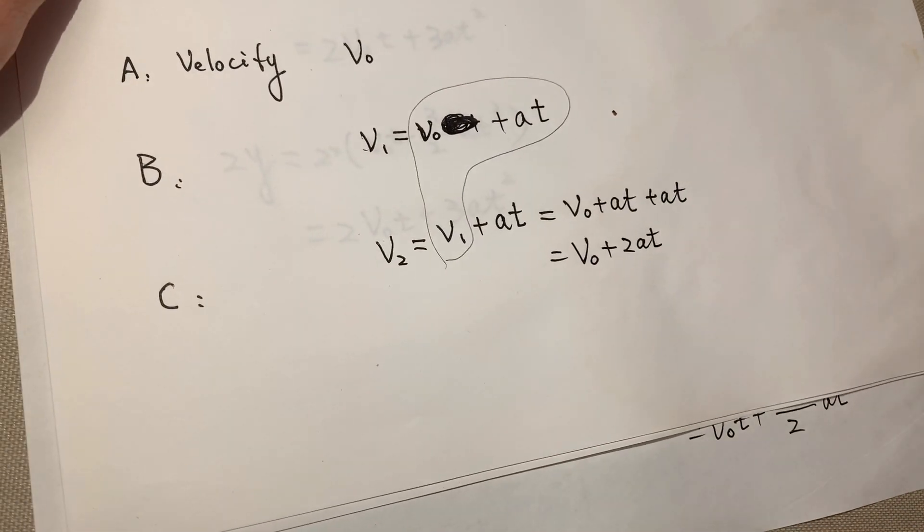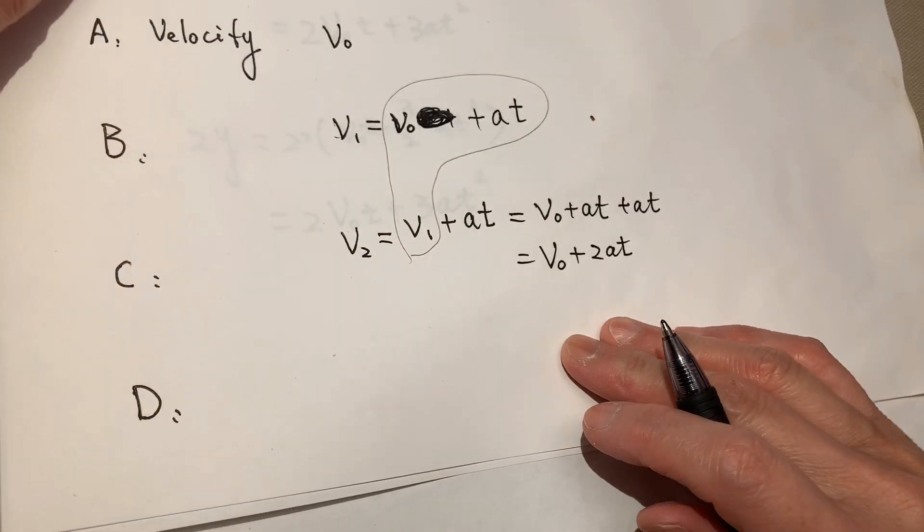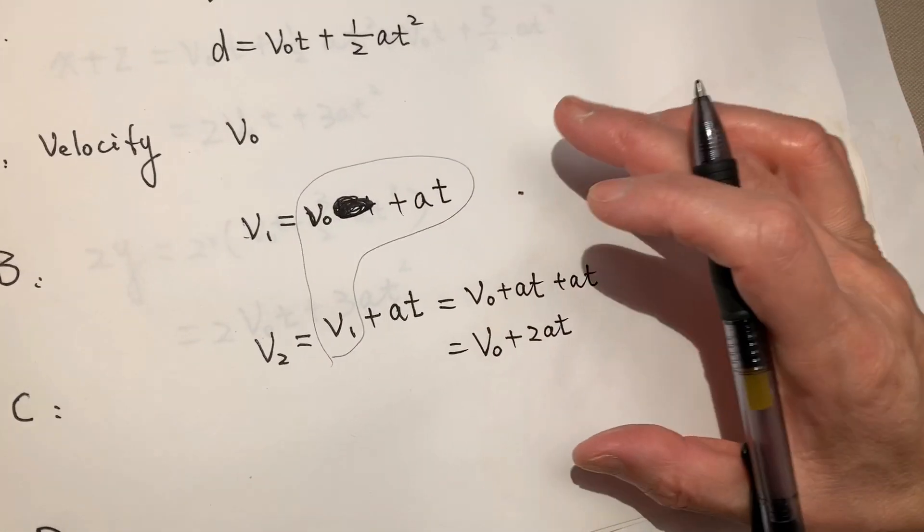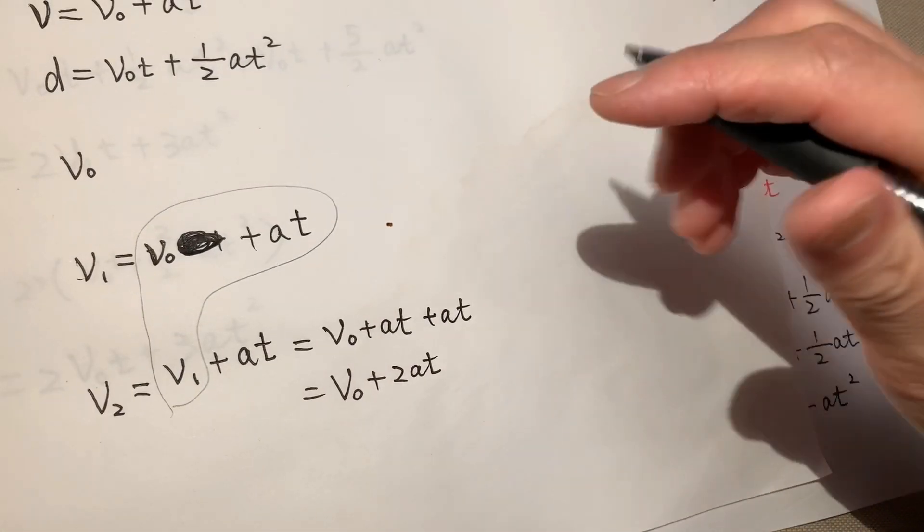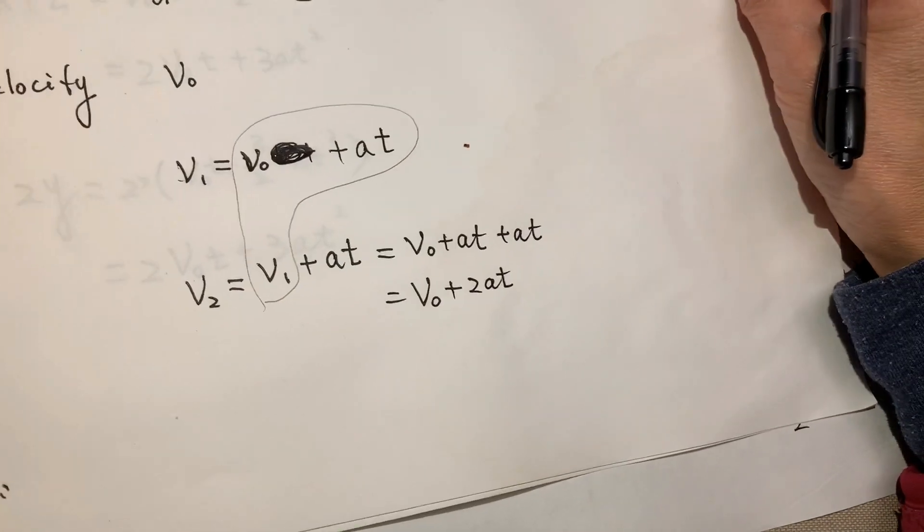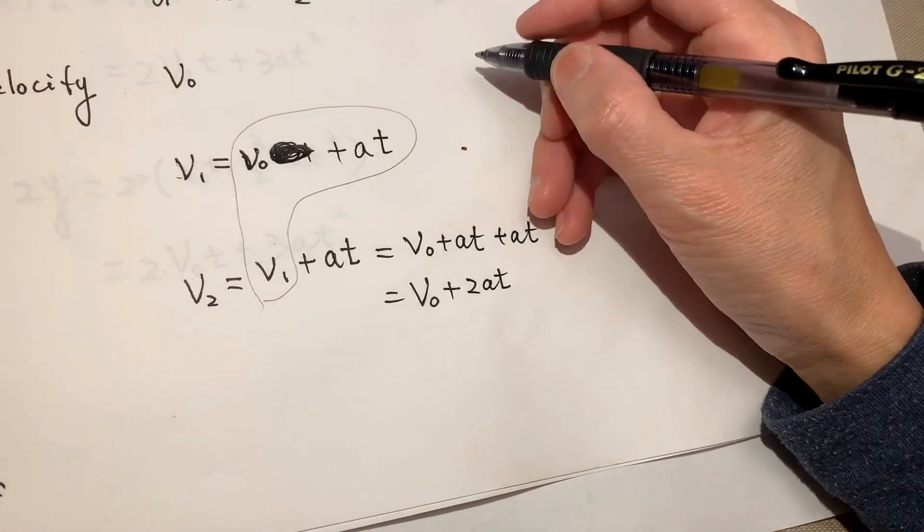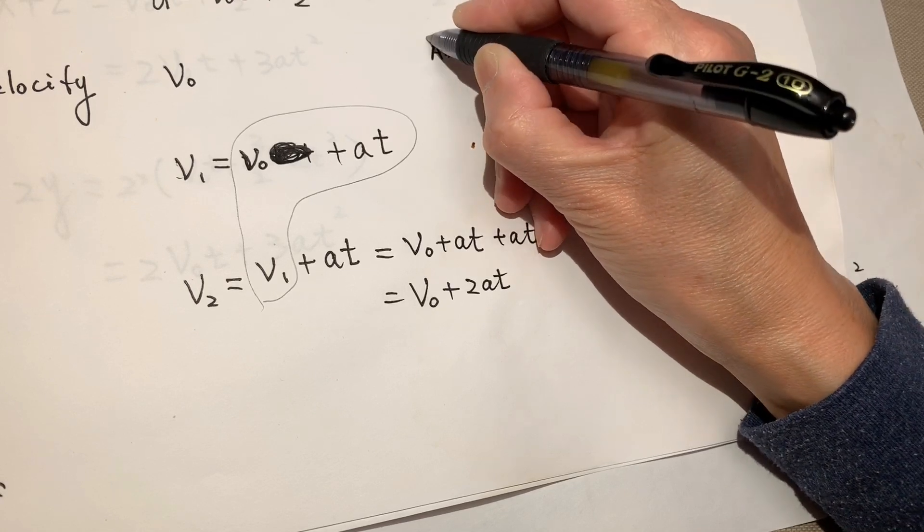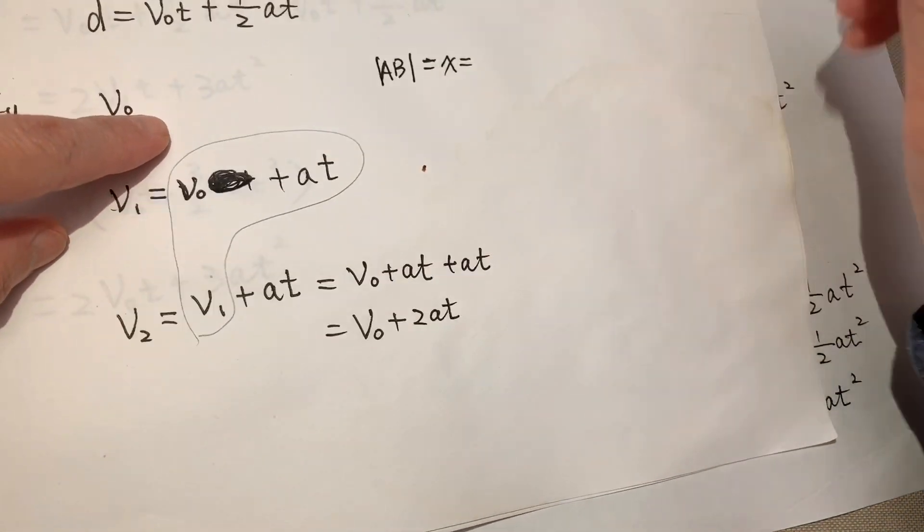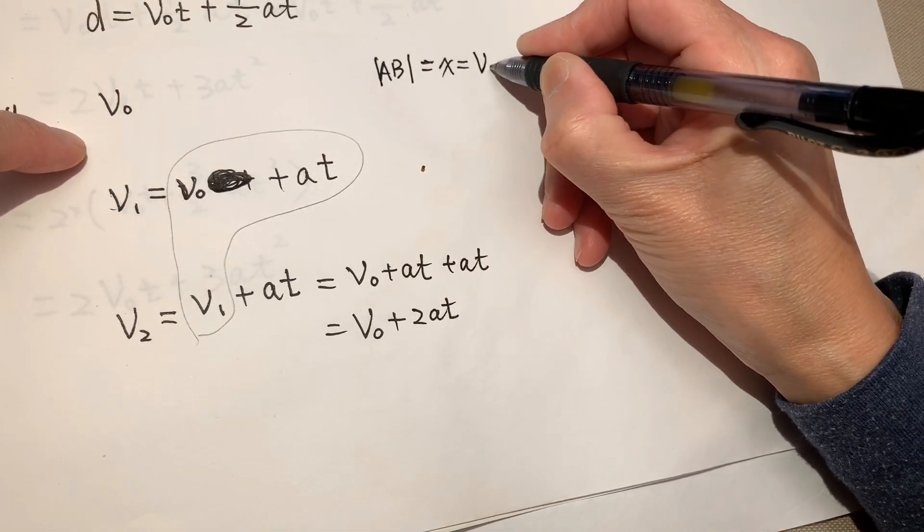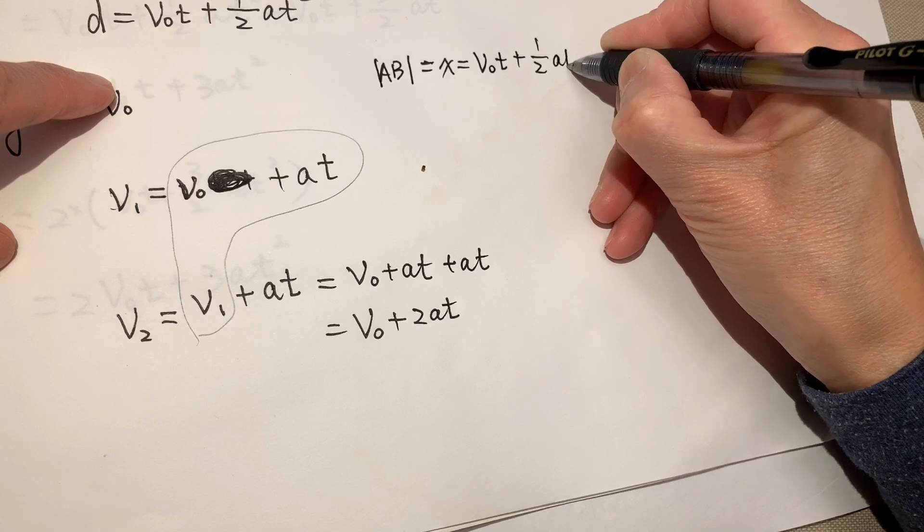And at this point D, we actually do not need to write down the speed. Because in the calculation, we do not need to do it. That is the end speed. Okay. So the distance between A and B. Now we will need to use the distance formula. So between A and B is called X. We use this formula. Initial speed times time plus half AT squared.